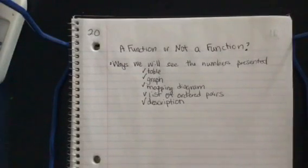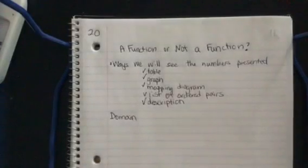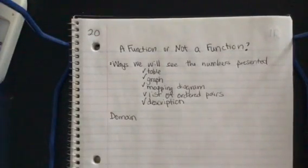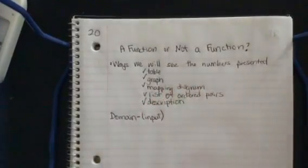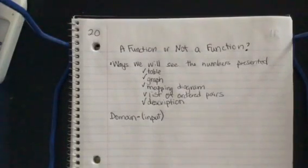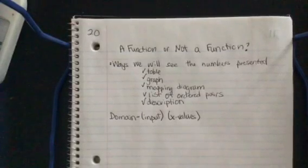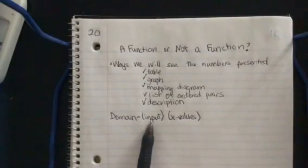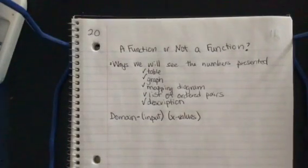So there's two vocabulary words, well, three that we're really going to focus on today. The first is our domain. Our domain, we also know as the input. So if you remember way back to the beginning of this unit, we were doing input-output tables. It's the input. It's also known as our x-values. So our domain is our input or our x-values. So it's the numbers we're putting into the equation.